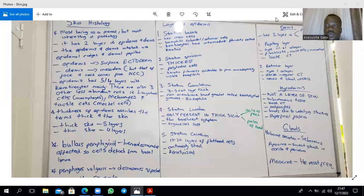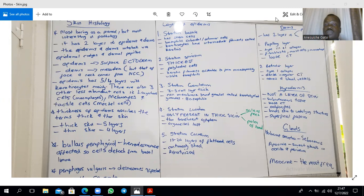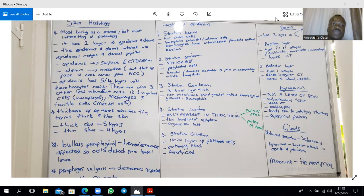Hello and welcome to a discussion on the histology of the integumentary system. The main functions of skin include acting as a barrier, it also has a function in homeostasis, it has a function in excretion via sweat, it has an immunologic function, and it also has an endocrine function in relation to vitamin D.